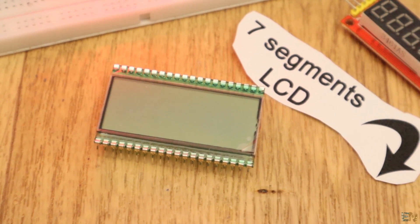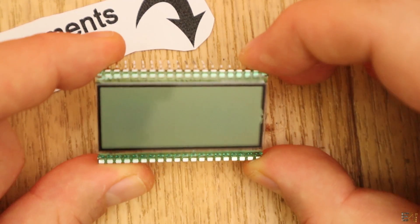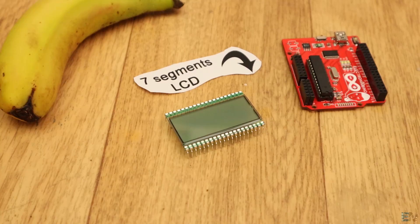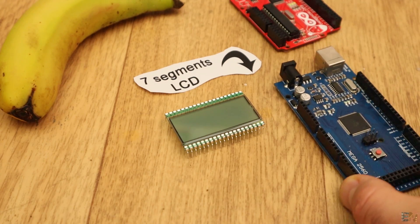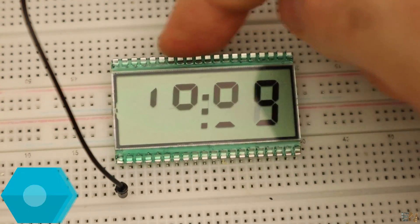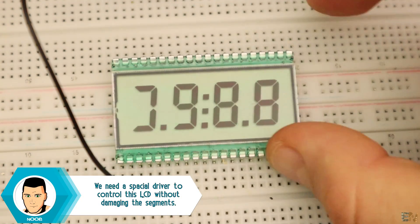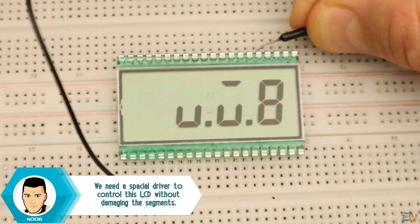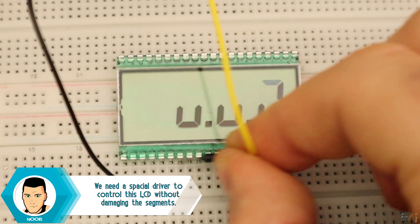It has 40 pins so in order to use it without the driver, we should use at least an Arduino Mega. Also, controlling this kind of LCD is not that easy. It is very sensible, I could activate it even with my fingers. Now, if I connect ground to these pins, I can turn the segments off.